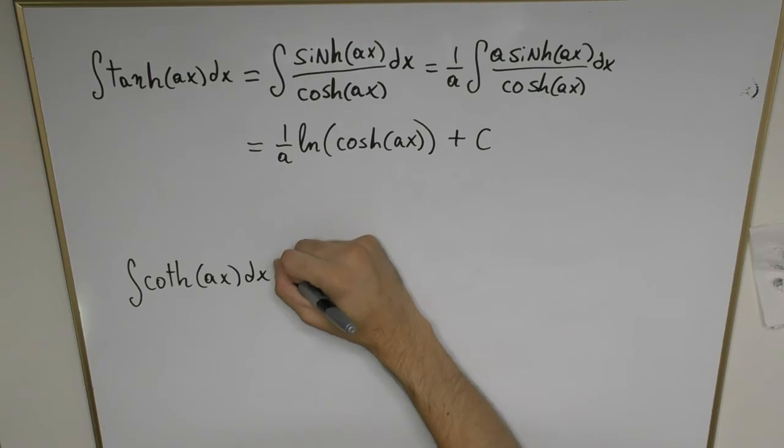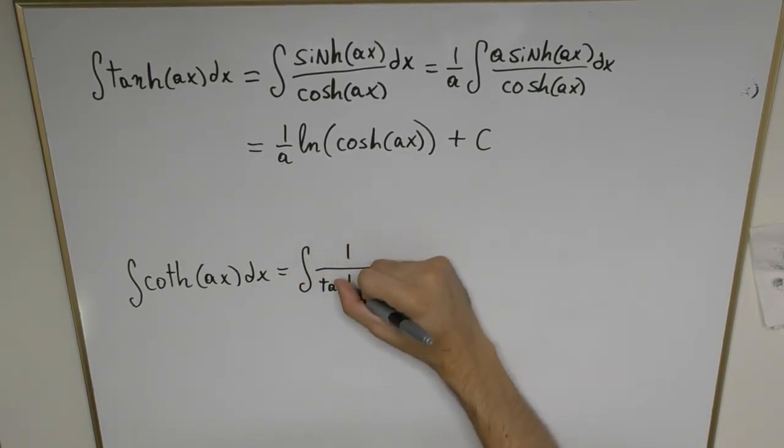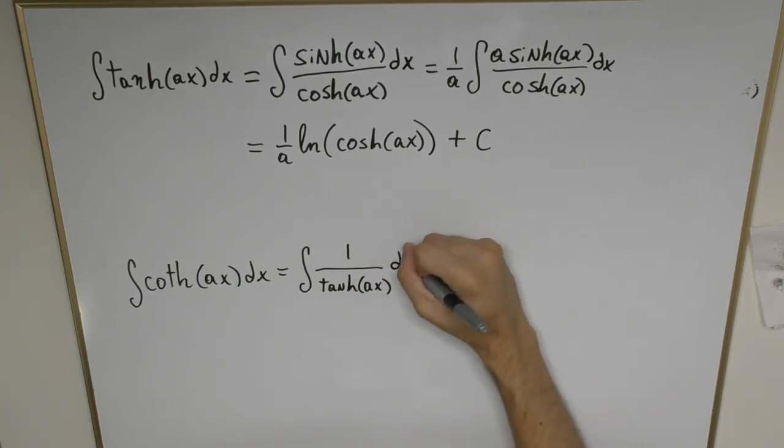We know the cotangent function is the same as 1 divided by the tangent function ax and then dx.